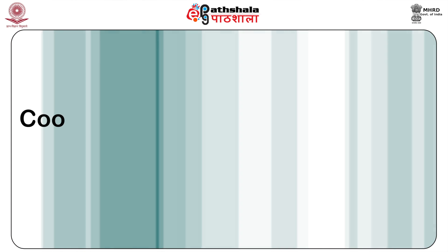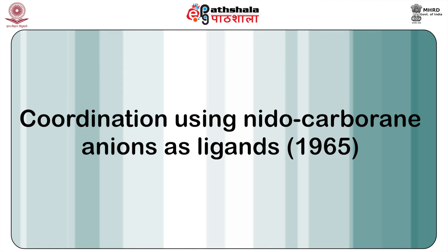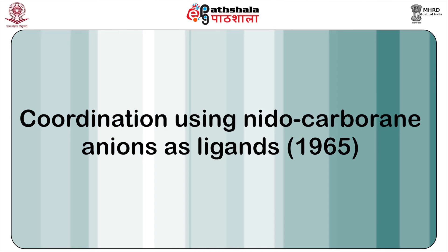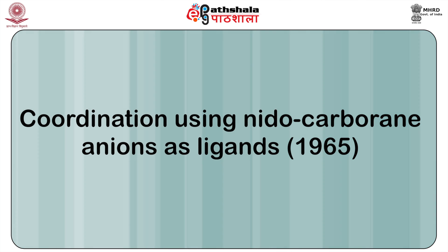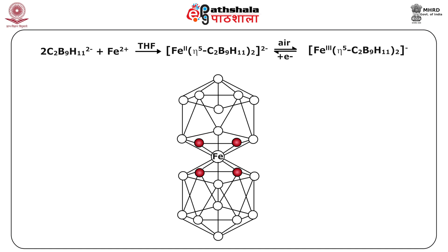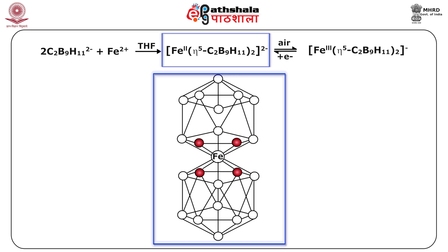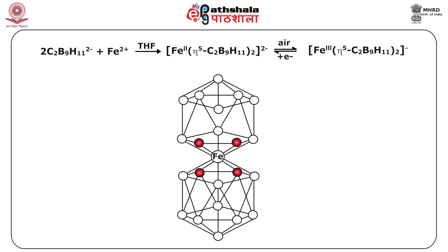Looking at the first method — coordination using nido-carburane anions as ligands, developed in 1965 — the reaction of the dicarbolide anion C2B9H11(2-) with FeCl2 in tetrahydrofuran, with rigorous exclusion of moisture and air, gives the pink diamagnetic bis-sandwich type complex of Fe(2+).